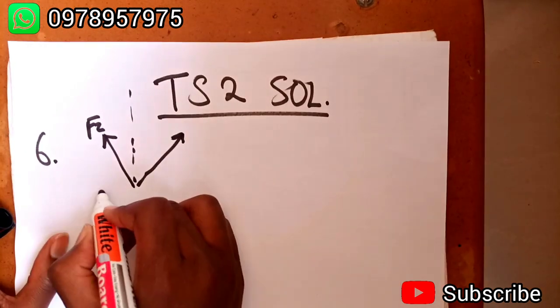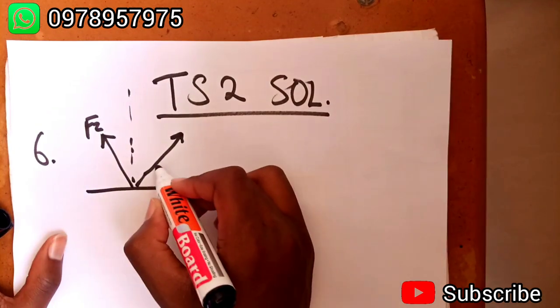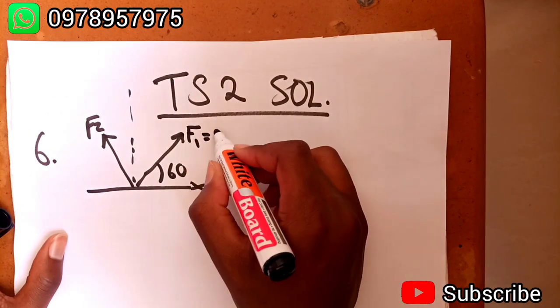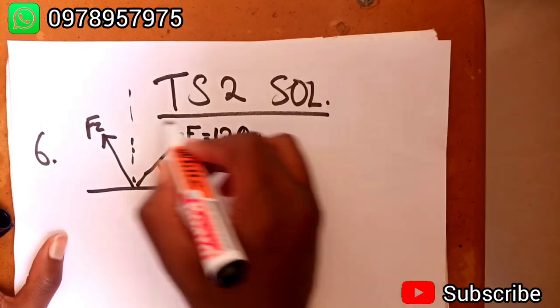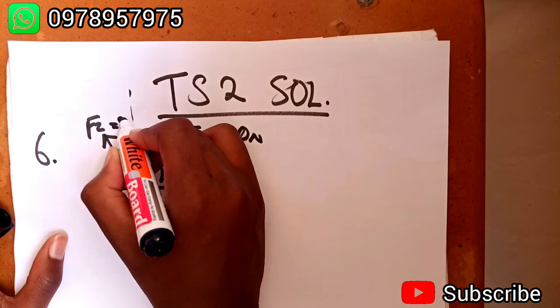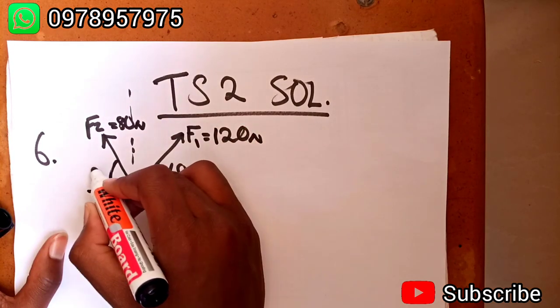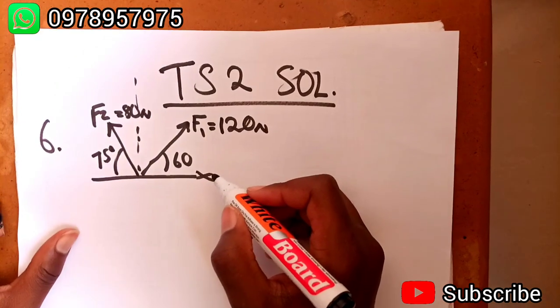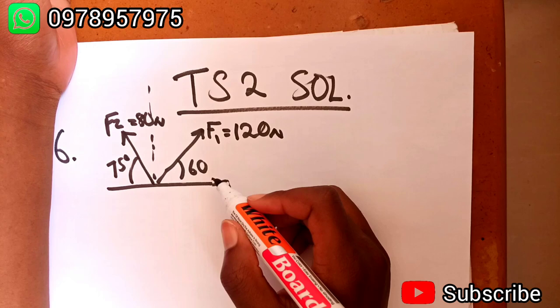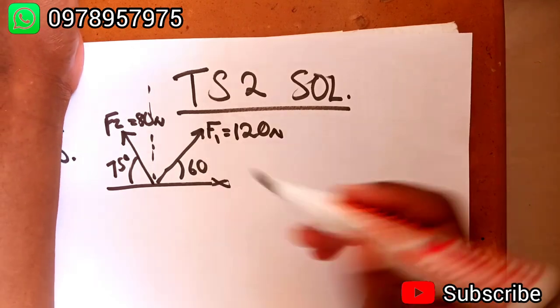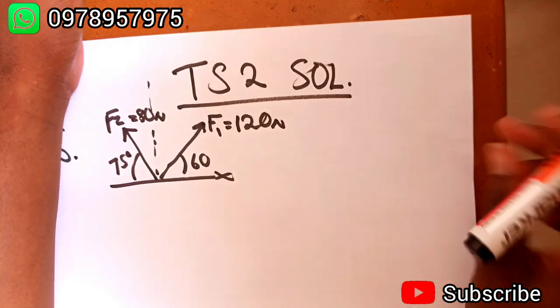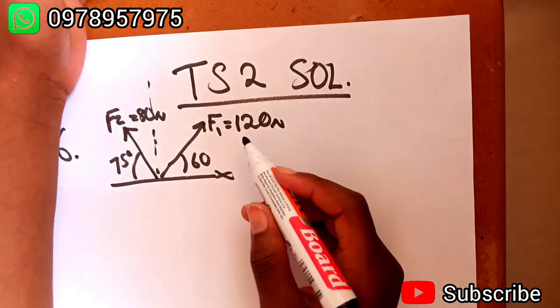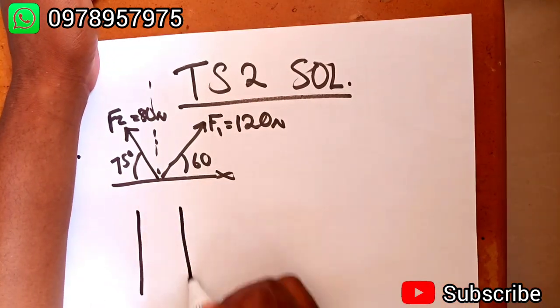Then we have got our x-axis. F1 is equal to 120 newtons, F2 is equal to 80 newtons. Now we can use the vector approach for summing up the forces. Later on I'm going to show you how you can use the summation of forces, which is actually the same thing anyway.